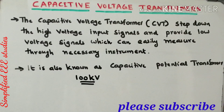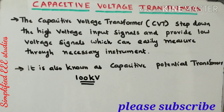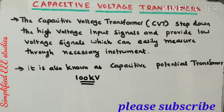CVT comprises three components: number one, a potential divider; number two, a resonant circuit; and number three, an electrostatic voltmeter. These are the three segments of the capacitive voltage transformer.